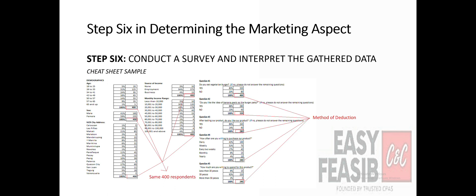We do not let the respondent answer further questions after choosing the answer no. Check question number one — it indicates that the respondent will no longer continue answering the next question after answering no. This method of deduction is necessary to filter what percentage is really willing to buy your product or service. You will learn more of this topic on the next video.